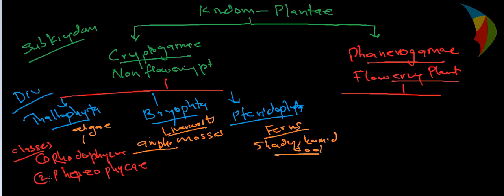Phaeophyceae covers the brown algae. The third class is Chlorophyceae. So these are the three classes under the Thallophyta division, and different types of algae are categorized under these different classes.